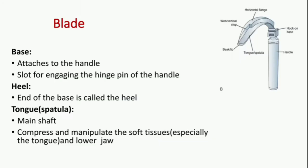The blade has a base, a heel, and a tongue or spatula. The base attaches to the handle and there is a slot for encasing the hinge pin of the handle. The endpoint of the base is called the heel. The main shaft is known as the tongue or spatula, which compresses and manipulates the soft tissues, especially the tongue and the lower jaw.